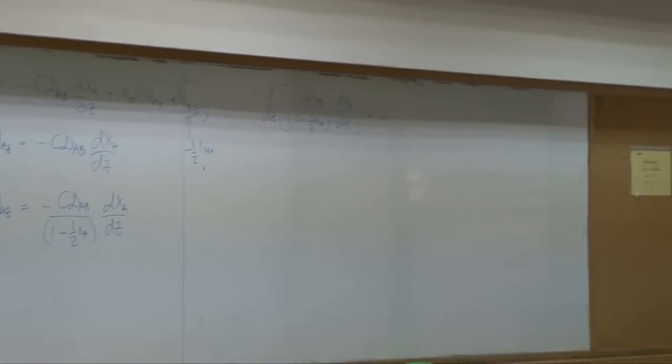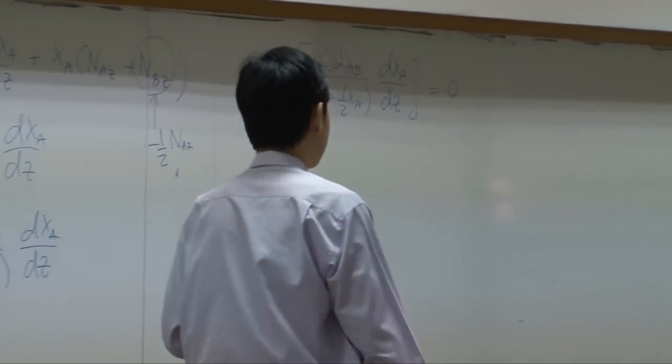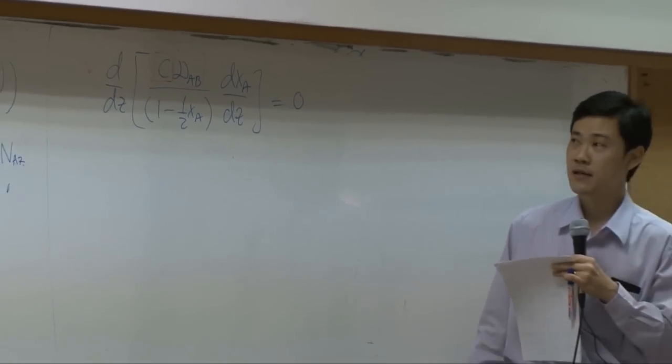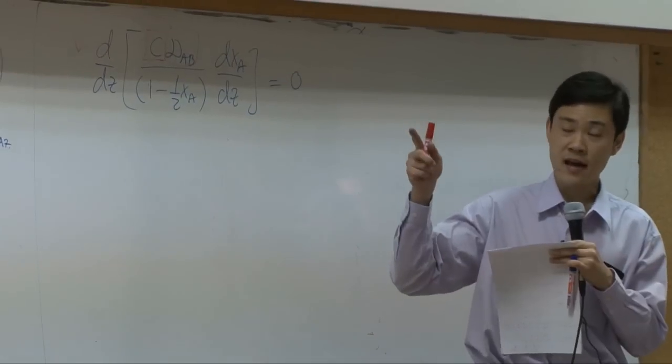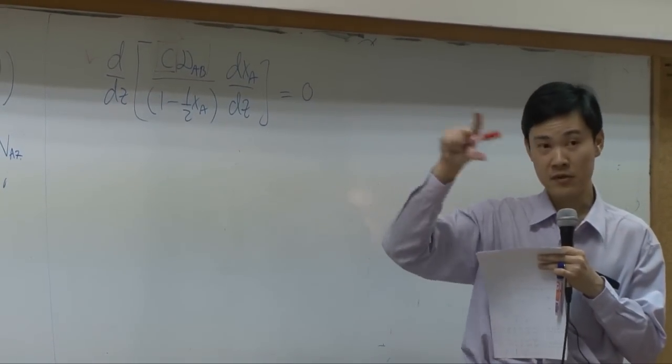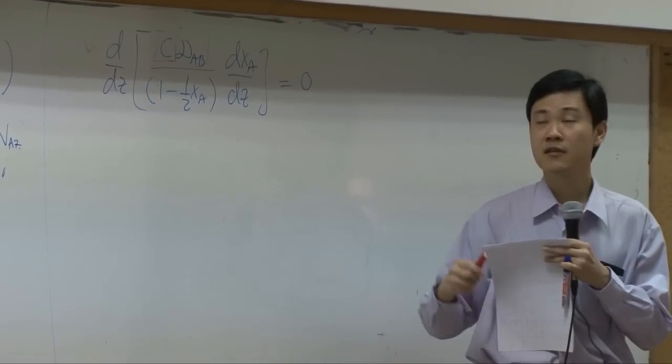Again, C is the total concentration of A and B combined. Now, but remember, right now, our system is gas. It's a film itself, which is gas. So therefore, gas can be assumed to be ideal gas as long as the pressure and temperature is not too extreme.